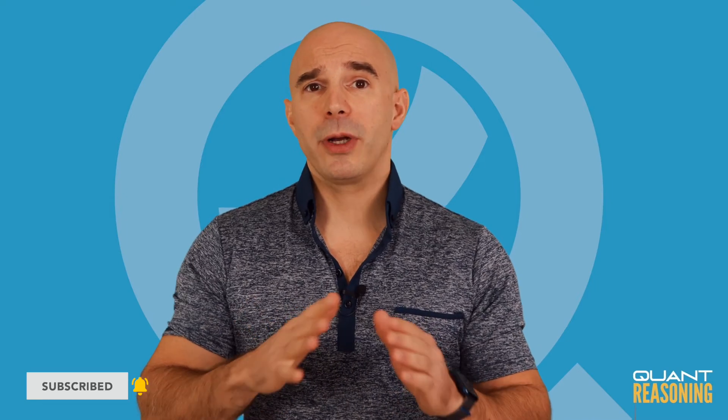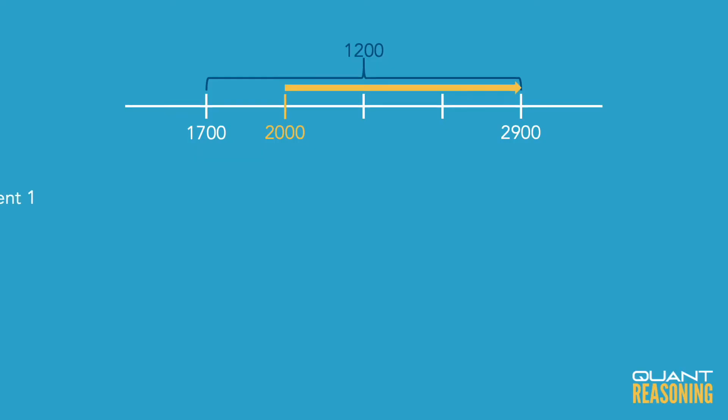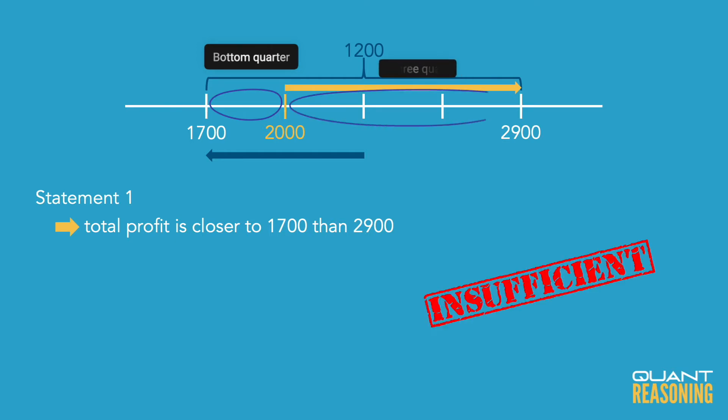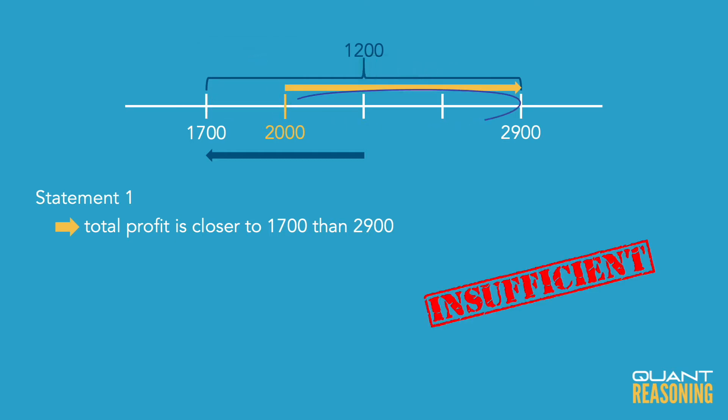Statement one puts us somewhere in the left half of this number line, the bottom half. But knowing that I'm in the bottom half doesn't actually tell me whether I'm in the bottom quarter or the top three quarters. So statement one is not sufficient on its own, and I'll eliminate the answer choices that claim that it is — so A and D are gone, and we're down to B, C, or E.